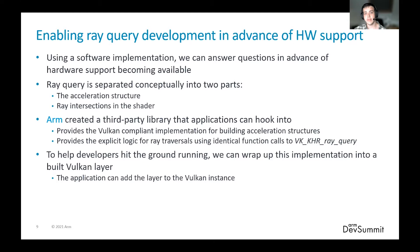Even though hardware support isn't yet available on mobile, ray tracing is possible right now with the use of software implementations. This allows projects to start targeting their content early and accustom developers to the Vulkan API. Since a software implementation isn't accelerated, we need a way to make graphics workloads representative and frame rates sufficient. There is a growing body of research helping optimize RayQuery, and when hardware support does become available, these algorithms and techniques will still be relevant.